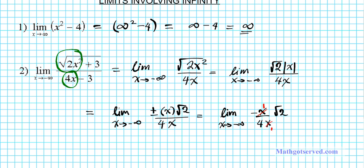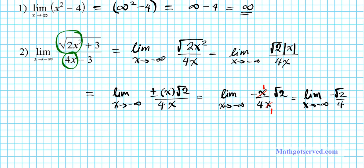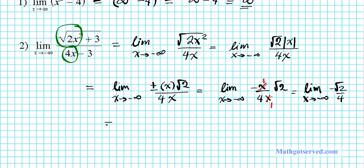We take the negative x over 4x root 2. Now we can go ahead and divide the x's — x over x gives 1. And we're left with the limit as x approaches negative infinity of negative root 2 over 4. Since this is a constant independent of the direction of x, our final answer is negative root 2 divided by 4.